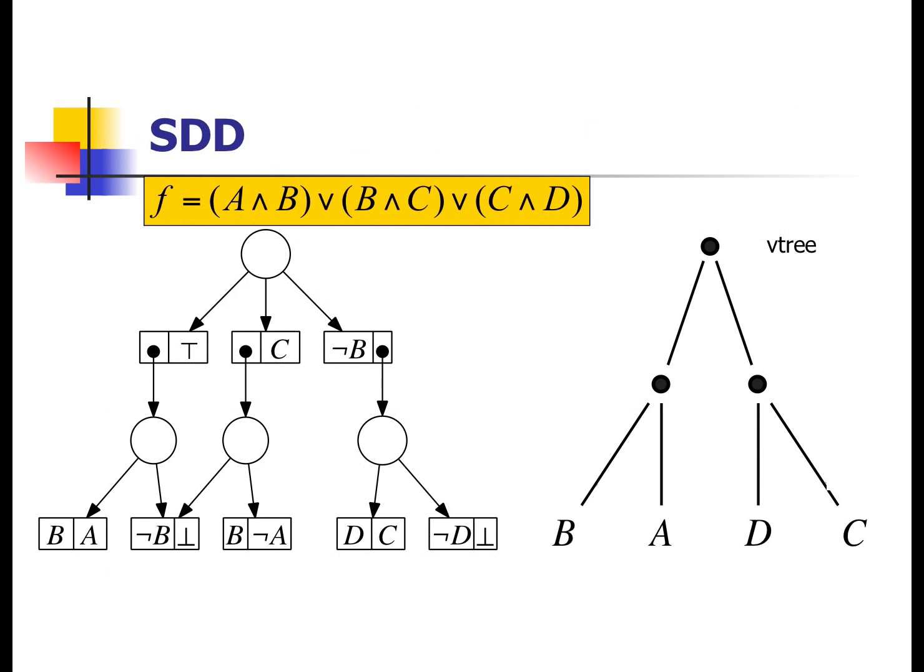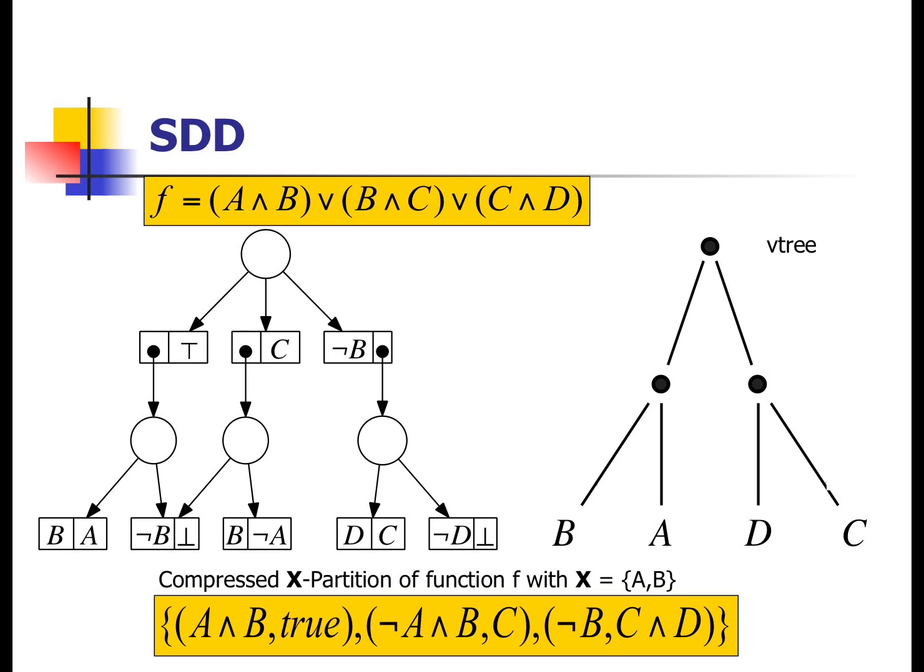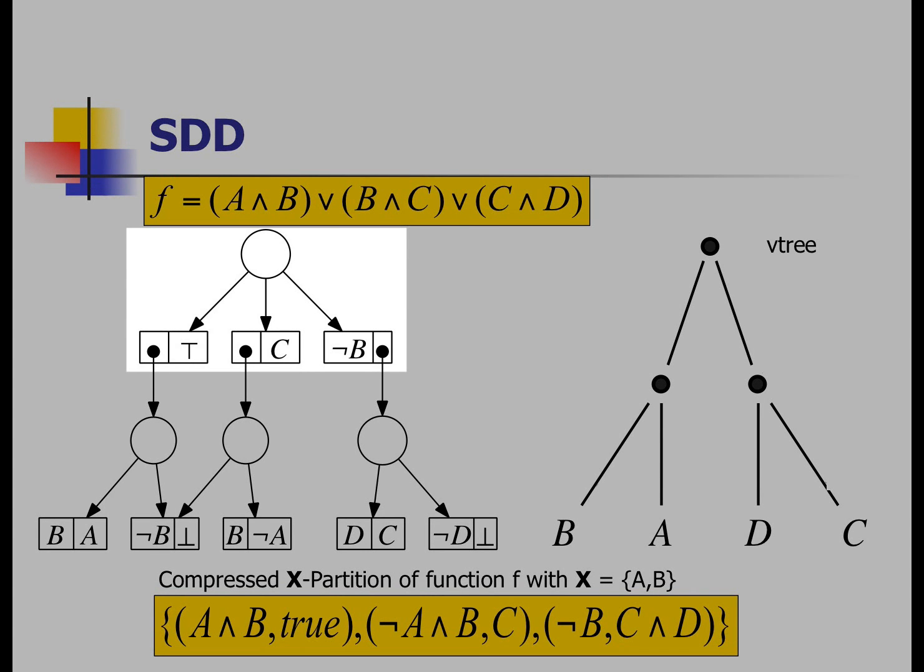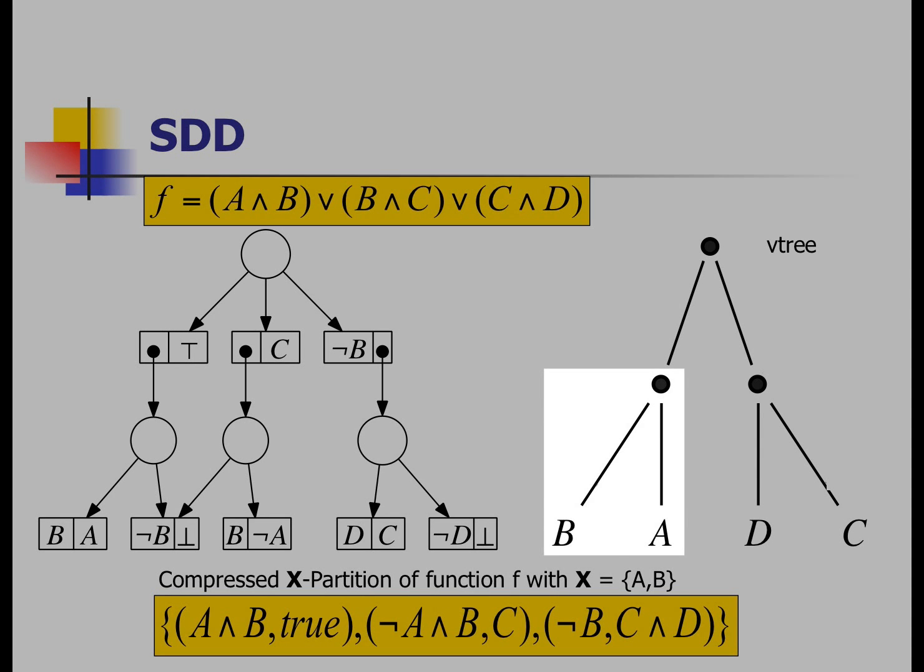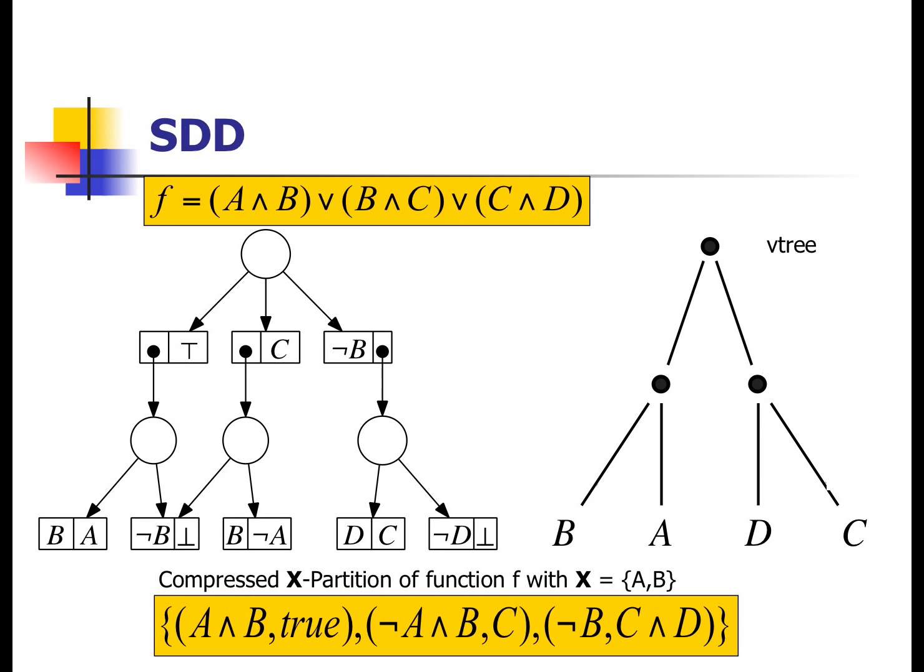Remember this example. This example is for this particular function, right? Now, the minute you drew this particular V tree, you have told me, I'm going to start representing this function or decomposing it by splitting its variables into an x and a y. We know that there is a unique compressed x partition where x is a and b and it happens, excuse me, it happens to be this one. It has three elements, three primes and three subs. What does that mean? I've already determined my first decision now. There's no choice. Now, the three subs and the three primes will be recursively represented in the same way by decomposing them further. And the V tree tells me how to do that. The primes will be decomposed using this sub-tree and the subs will be decomposed using this particular sub-tree. You keep doing this until you hit boundary conditions and we got our SDD.